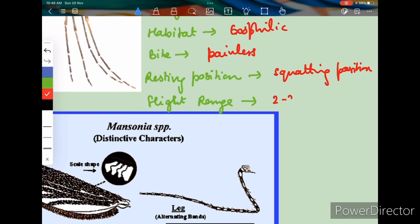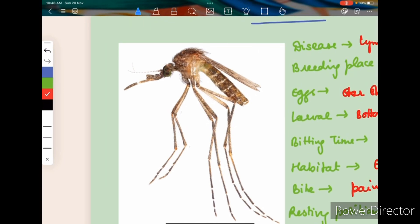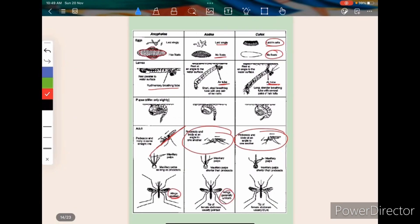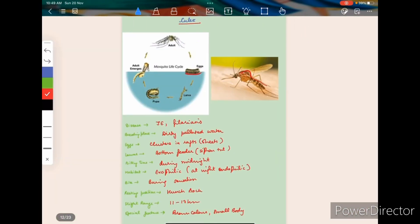And the flight range is two to three kilometers. Now if you see this mosquito, it has got large legs and large body. So this was all about all the mosquitoes today. We studied about the Anopheles mosquito, then the Culex, then Aedes, and then the Mansonia mosquitoes.